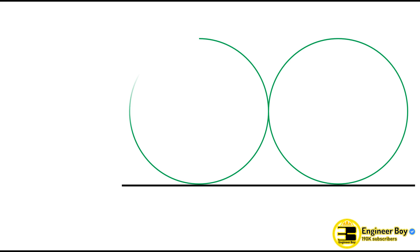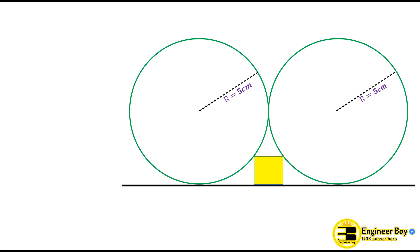We have problem 35 where two circles are tangent to a line and the radius for both is the same, which is 5 centimeters. There is a square between these two circles that is tangent to the line and to both circles. We are asked to determine the area of the square — remember, area of the square equals a², where a is the side of the square. Give this problem a try, then watch the video and compare your answer.